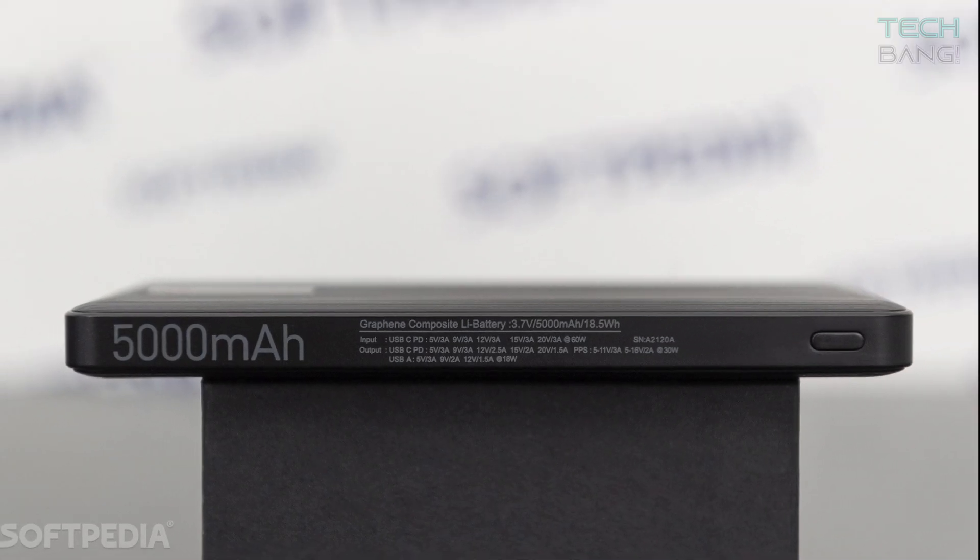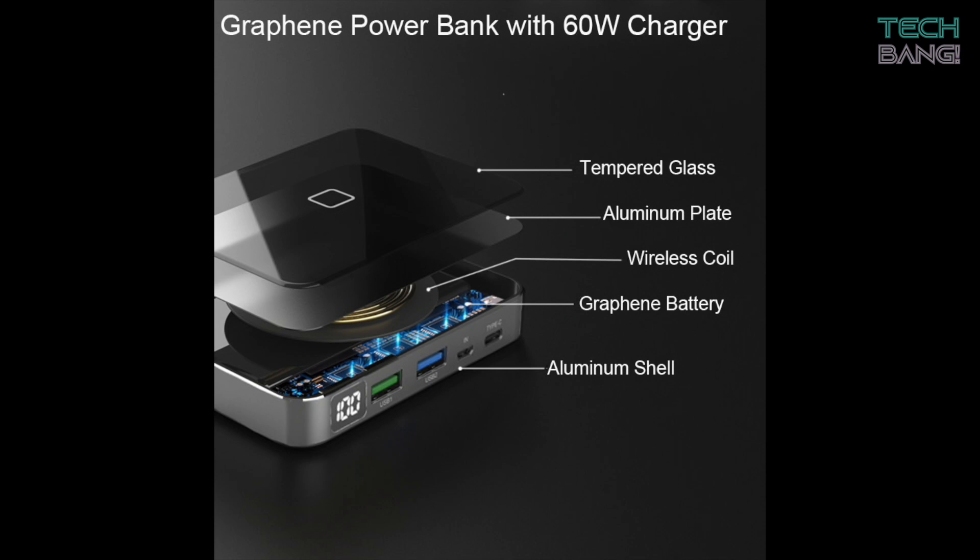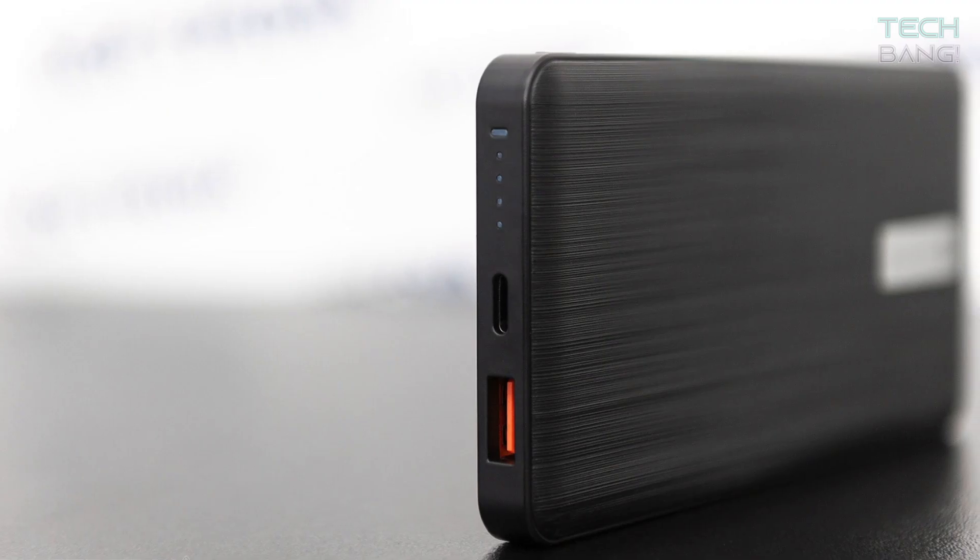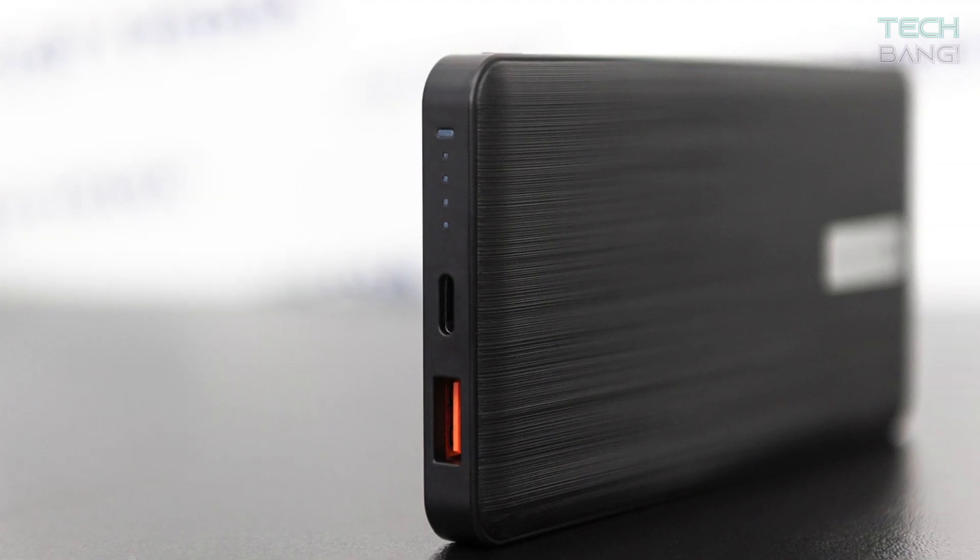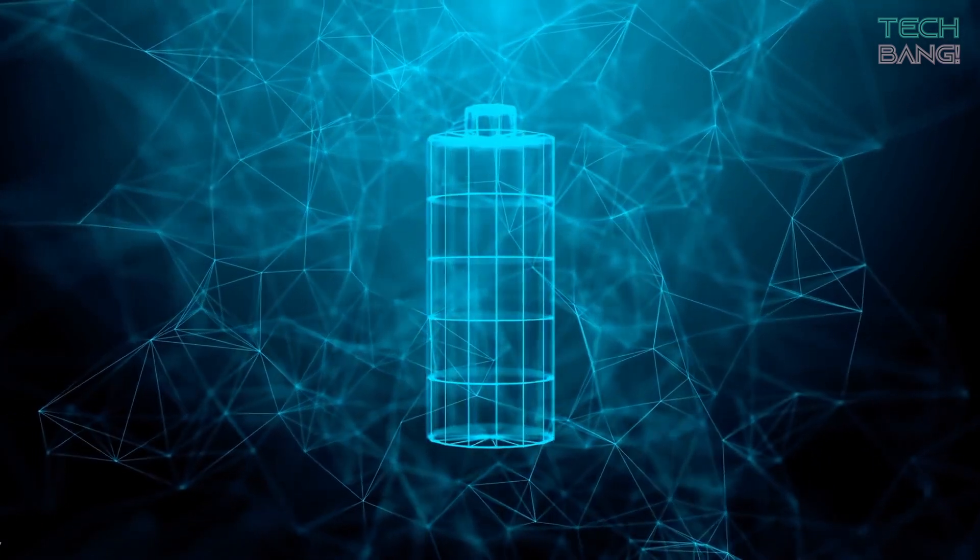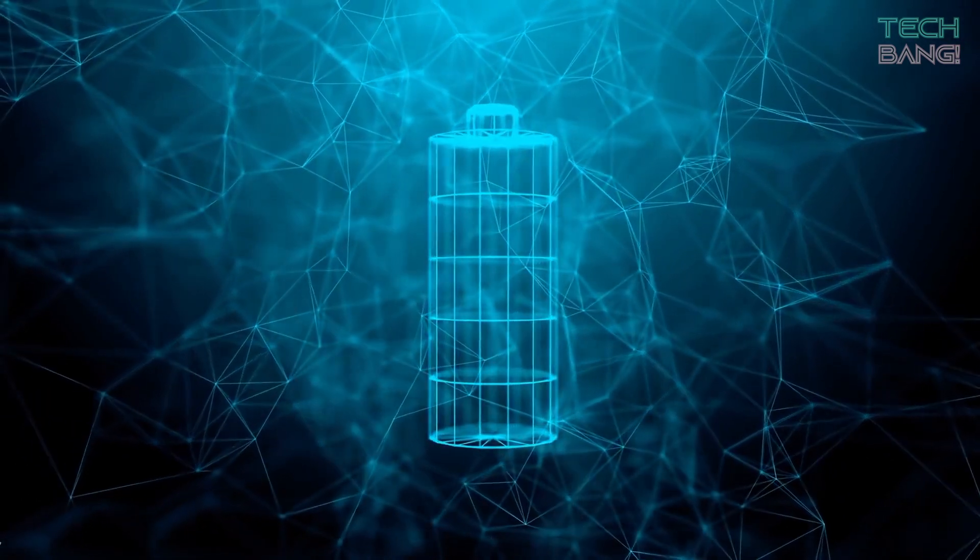Graphene batteries respond to fast charging better, as it will just take 20 minutes to charge a 3000 mAh cell with a 60-watt charger. Normal phone batteries can't safely be charged with a 60-watt charger.